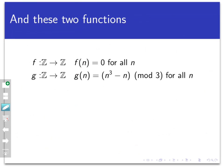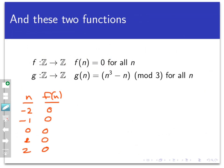Let's look at another example of two functions, also called f and g, but defined differently. These two functions both go from the integers to the integers, so they both have the same domain and the same co-domain. The first function's formula is really simple — anything you put into it gets sent to zero. Now looking at g, there is a difference: g takes n, first computes n cubed minus n, and then finds the least non-negative residue mod three.